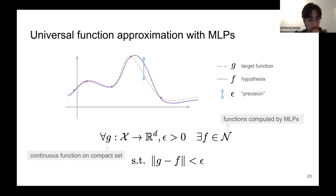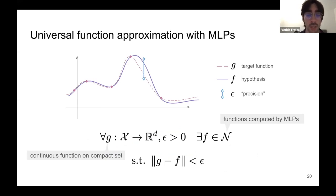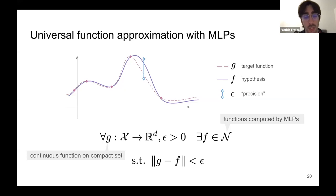The ability to distinguish graphs is related to universal function approximation. For standard MLPs, we know they can approximate any continuous function on a compact set to arbitrary precision. A natural question is whether this holds for graphs — are message passing neural networks universal approximators of graph functions?